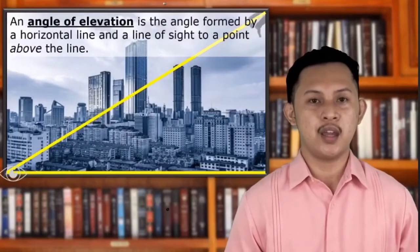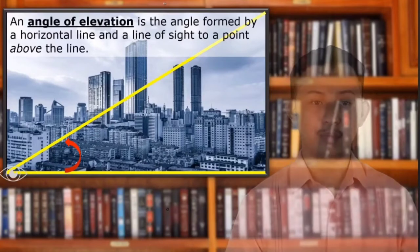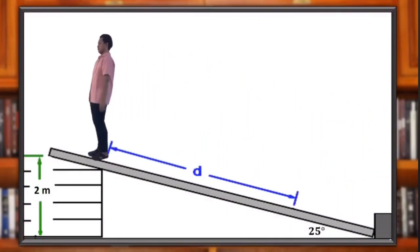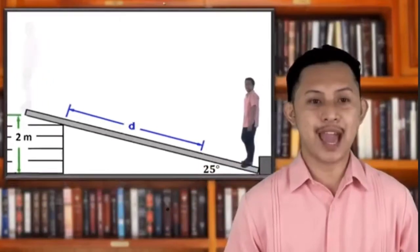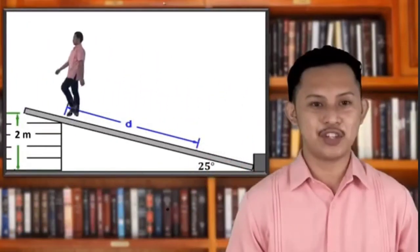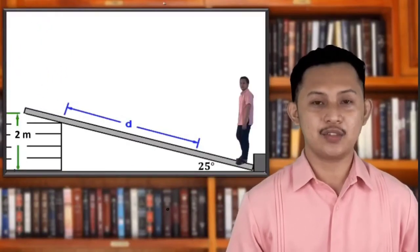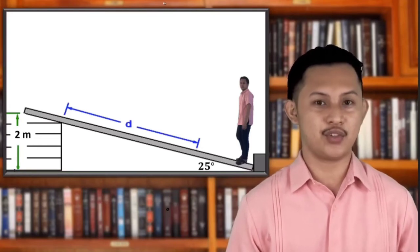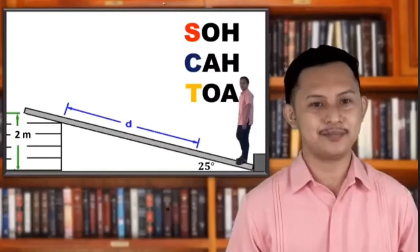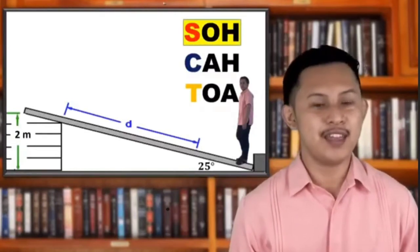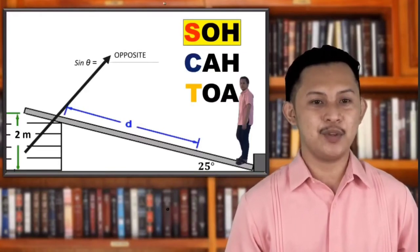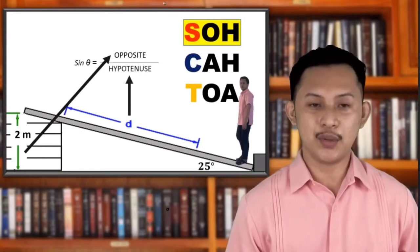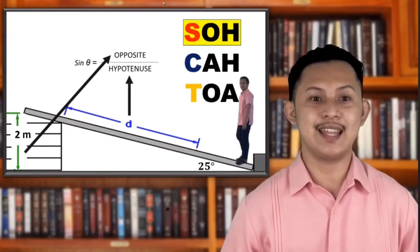Now, let's try to solve an angle of elevation on this inclined plane. Suppose that a person is walking through an inclined plane — or, shall I say, it is a ramp. We will be using the trigonometric ratio that we had last week to solve for the angle of elevation based on this given illustration.